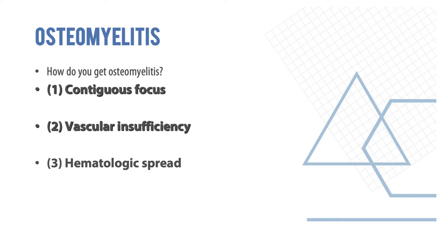There are three main ways you can get osteomyelitis. First is contiguous focus, the most common type, usually due to trauma, surgery, or insertion of hardware — a localized infection induced by these factors. The second most common is vascular insufficiency, related to diabetes or peripheral vascular disease, which almost always begins with a soft tissue infection that spreads to the bone. The third is hematological spread, the least common in adults, seeded from another source such as IV drug use or sickle cell disease, and seen mostly in pre-adolescent children and the elderly.